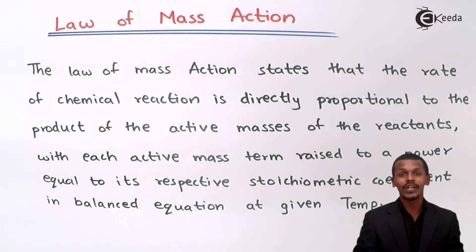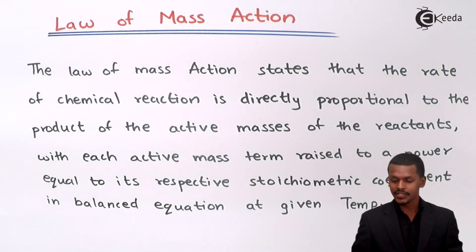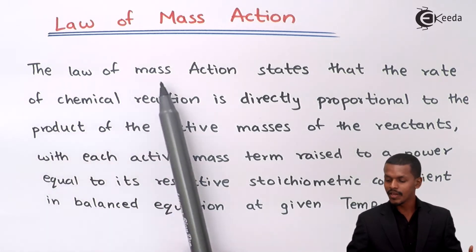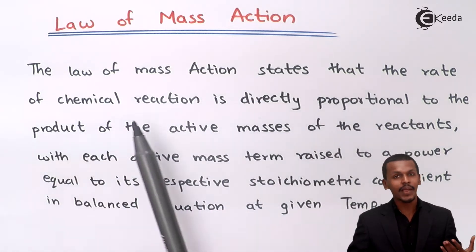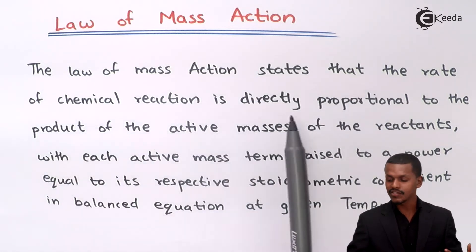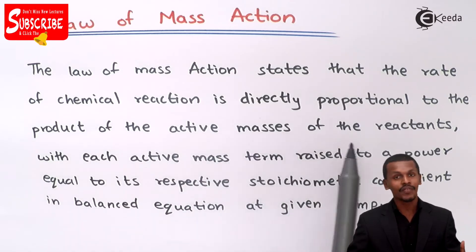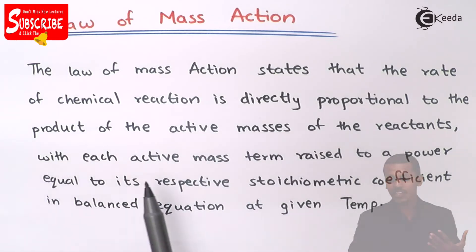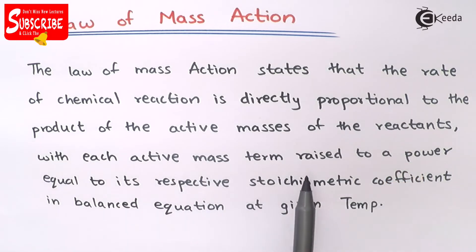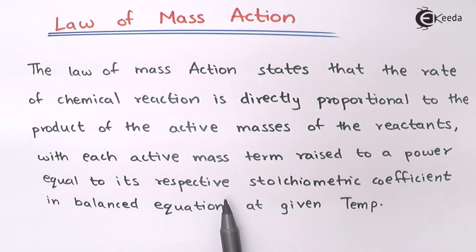So now let us understand what is the Law of Mass Action. According to the Law of Mass Action, the rate of a chemical reaction is directly proportional to the product of the active masses of the reactants, with each active mass term raised to a power equal to its respective stoichiometric coefficient in a balanced equation, at that given temperature.